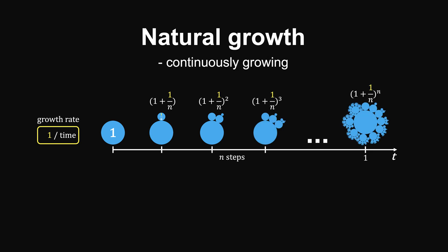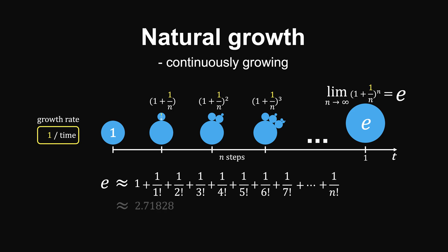We've shown that when the growth is happening continuously, so that when n approaches infinity, the outcome reaches a limit called e. We've shown that e can be calculated as an infinite series. It's approximately 2.71828.